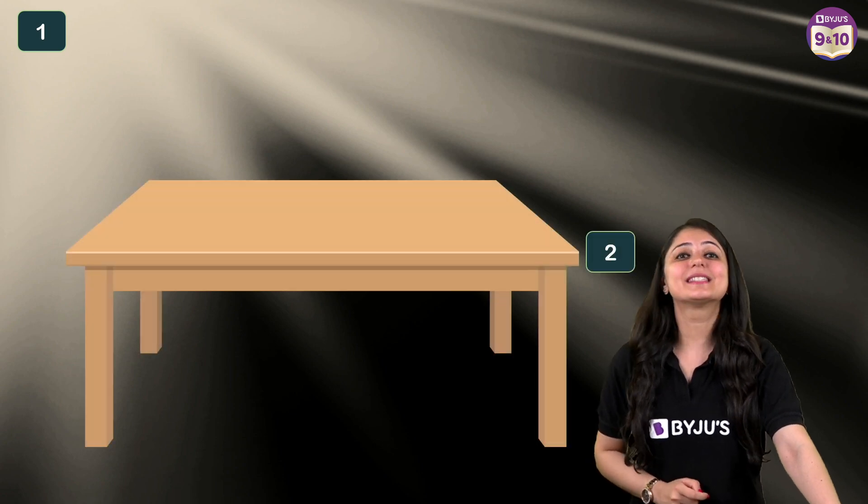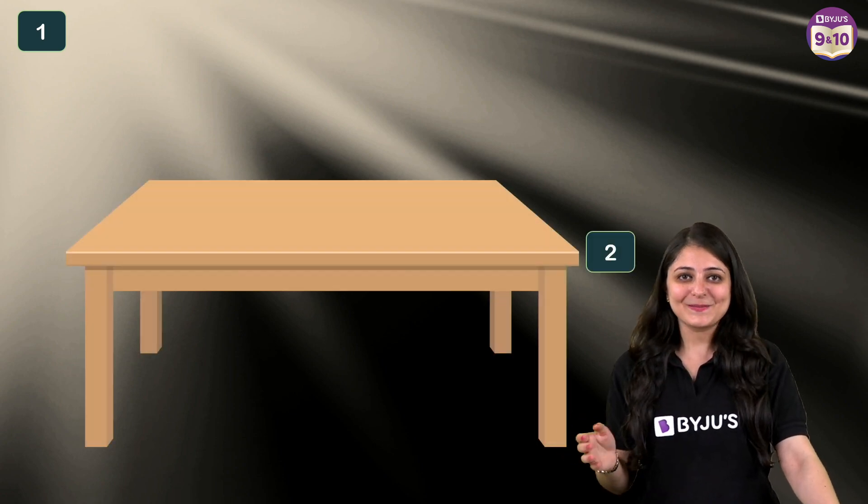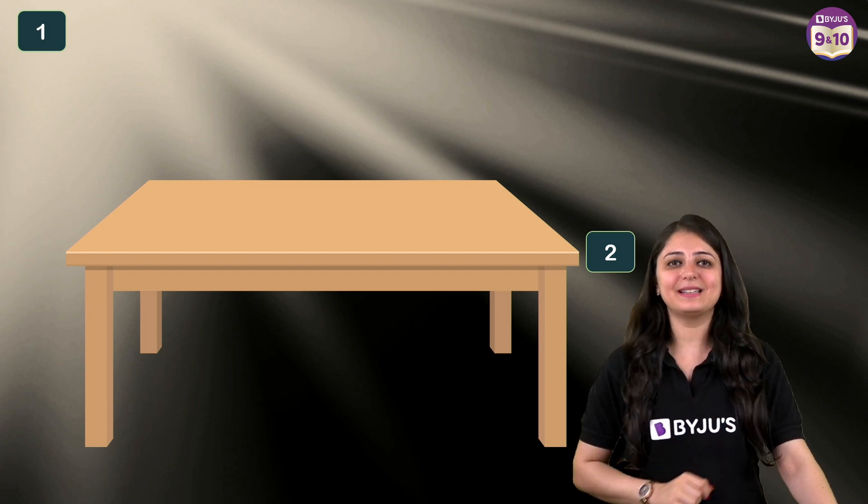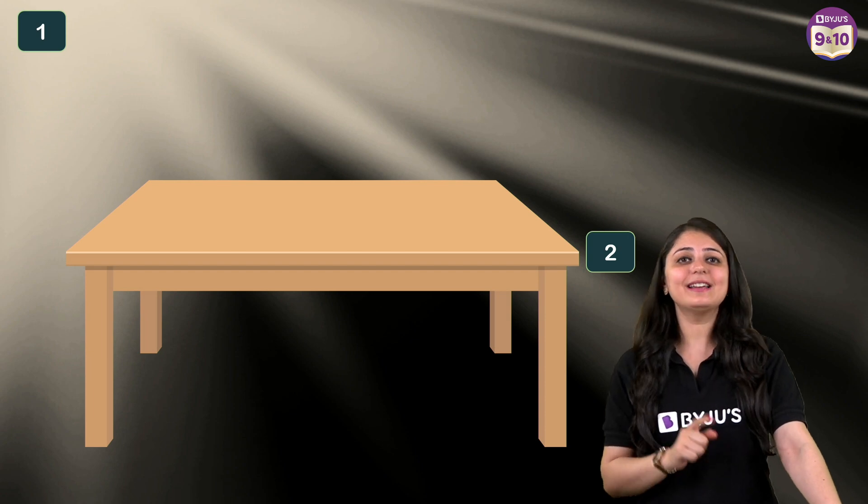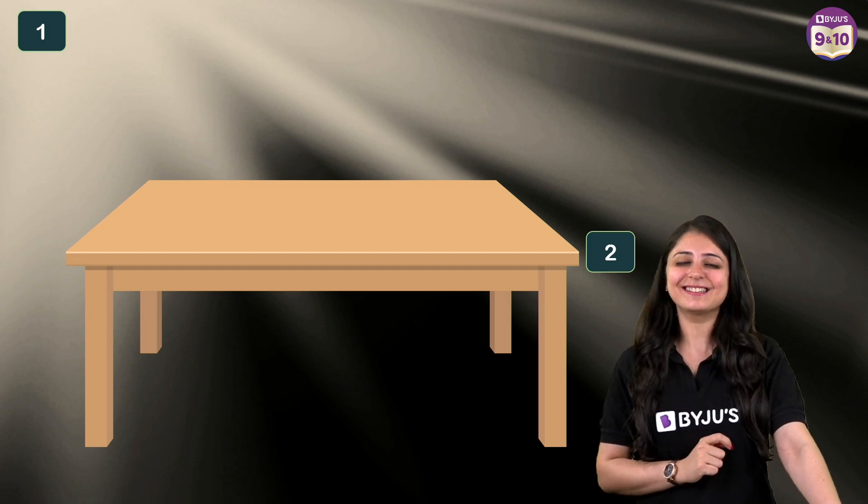Number 2, study table. Avoid studying on a bed. You need to have a simple table and chair in your room. When you sit and study on a table and a chair, laziness actually decreases.